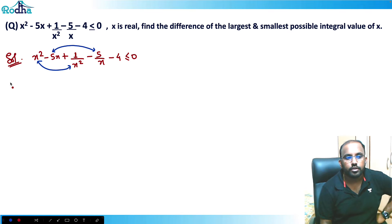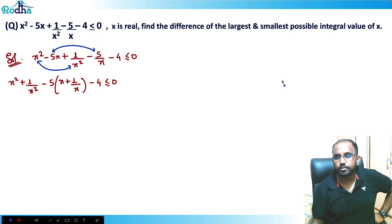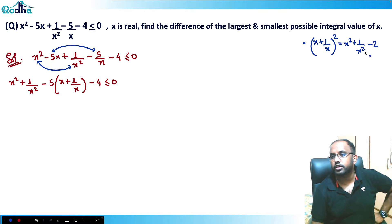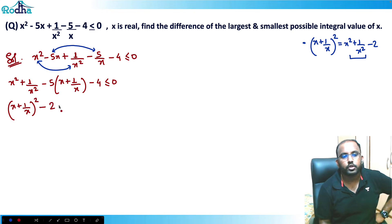So I'll write x² + 1/x² - 5(x + 1/x) - 4 ≤ 0. Now I know I can use the identity: (x + 1/x)² = x² + 1/x² + 2. So x² + 1/x² = (x + 1/x)² - 2. Substituting: (x + 1/x)² - 2 - 5(x + 1/x) - 4 ≤ 0.